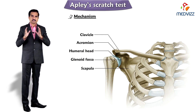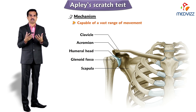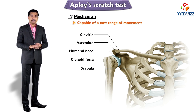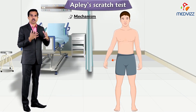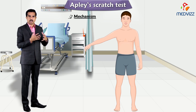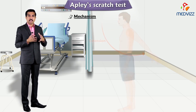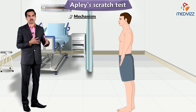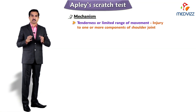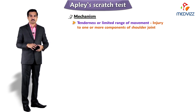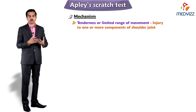Under normal circumstances the shoulder joint is capable of a vast range of movements. Apley's scratch test assesses glenohumeral abduction, adduction, flexion, extension, internal rotation, and external rotation. Tenderness or limited range of movement suggests injury to one or more components of the shoulder joint.